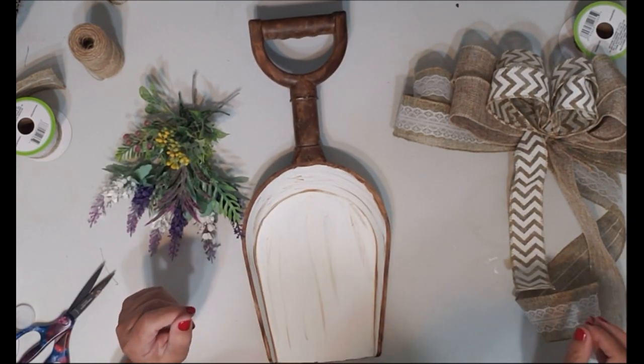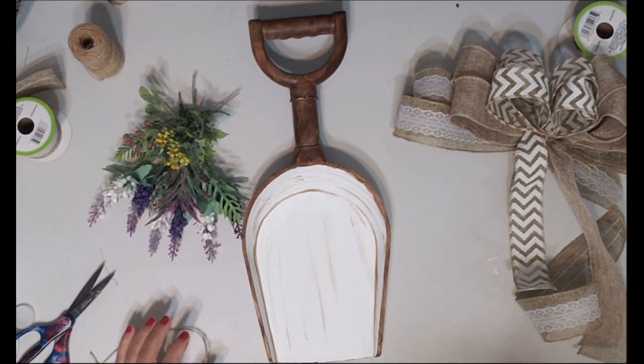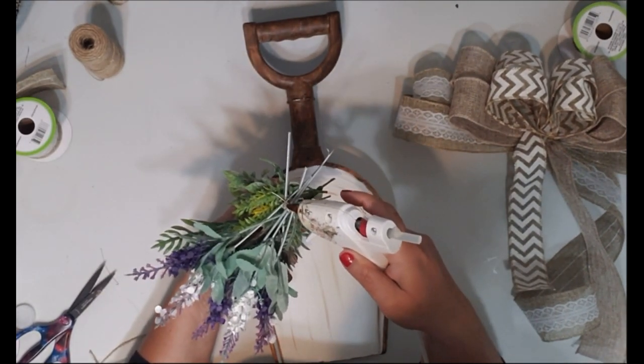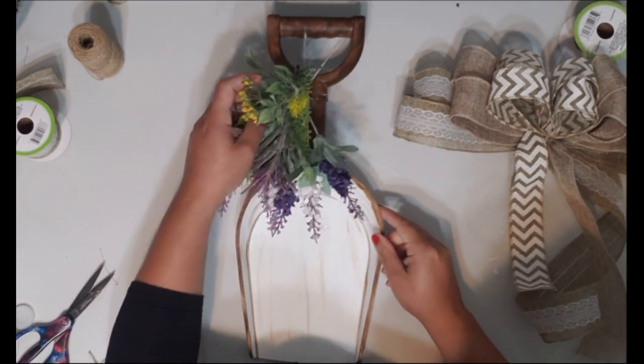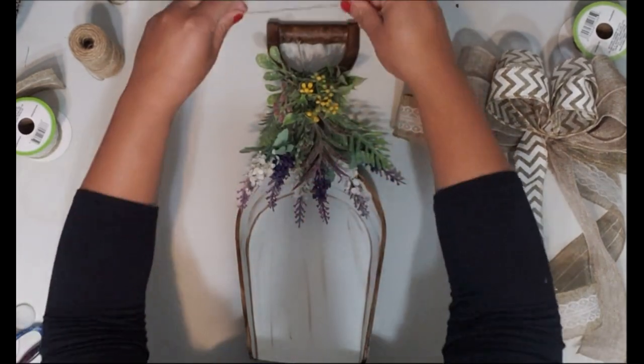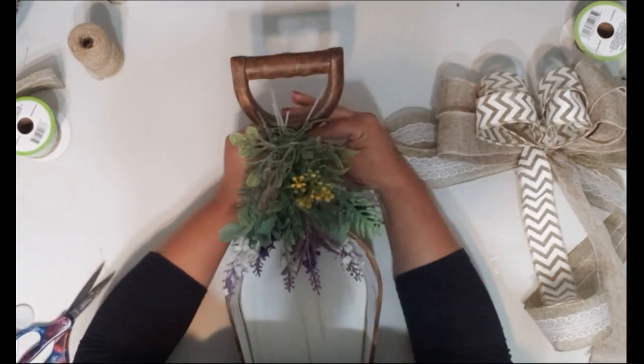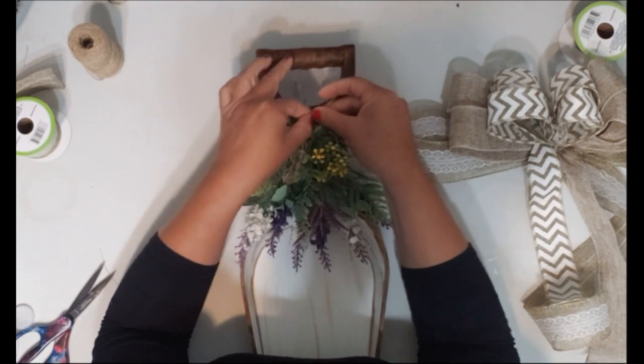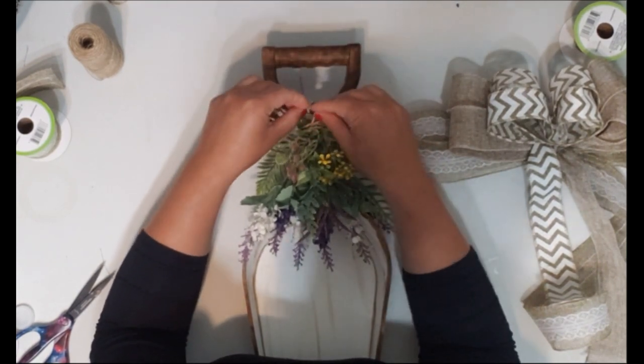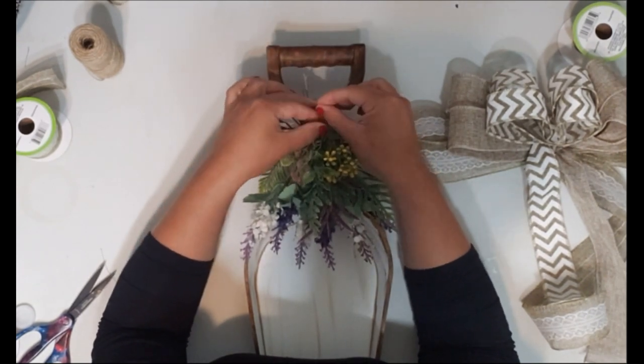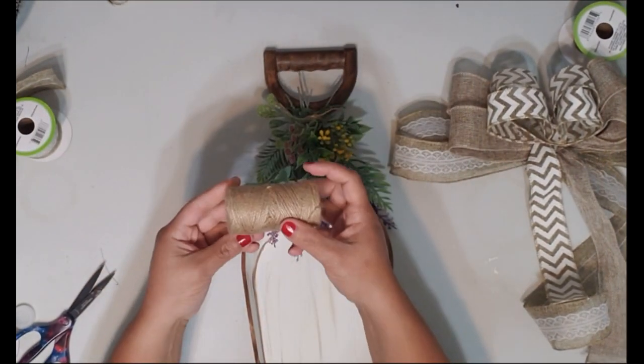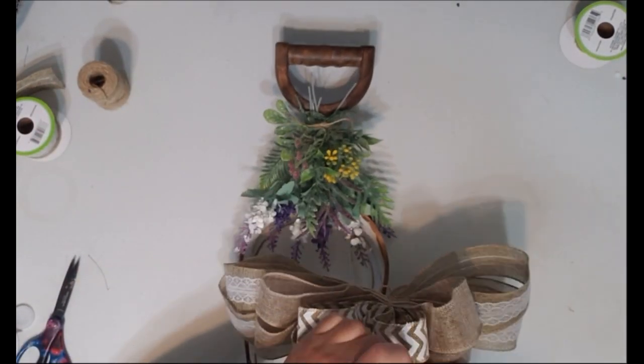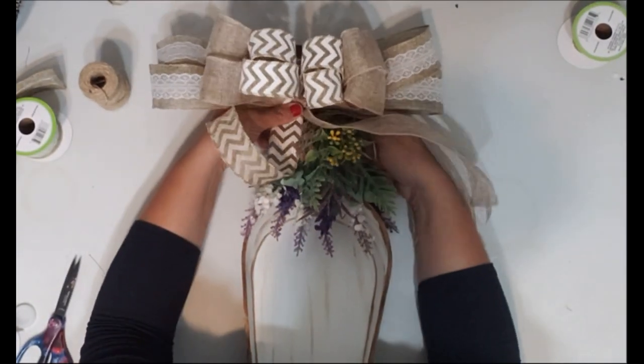Before attaching your bow, make sure you have a little bit of jute twine and some hot glue. Place a little bit of hot glue back here and you're just going to place the bundle of flower right there. Then we're going to take this jute twine and just tie it on there just to make it secure. That's just to tie it off so it's on there real secure like.